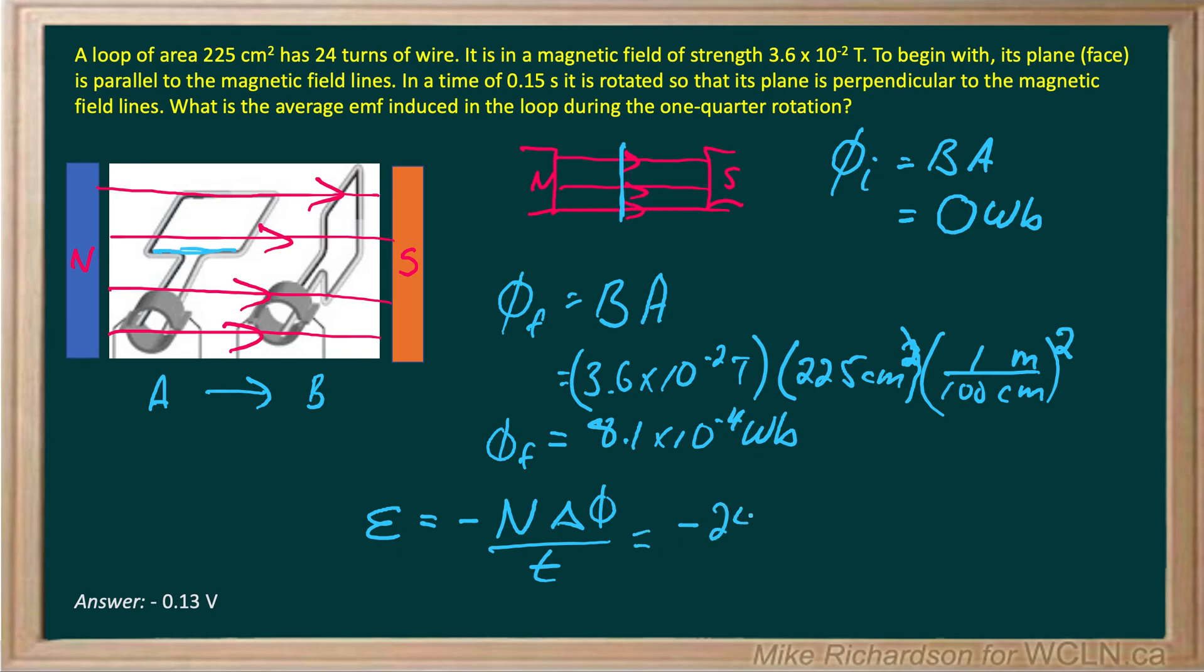So negative 24 turns times flux final minus flux initial, all divided by the time it takes, which is 0.15 seconds, gives me an induced EMF of negative 0.13 volts.